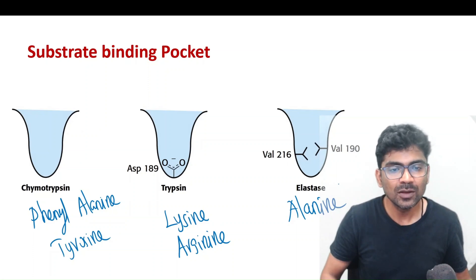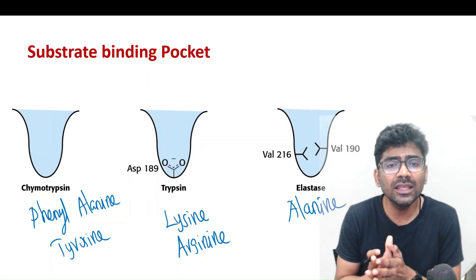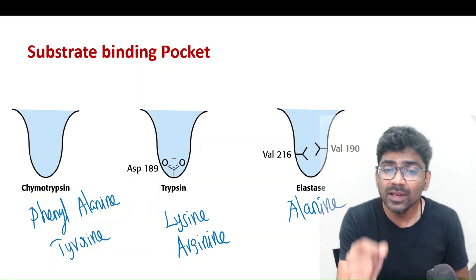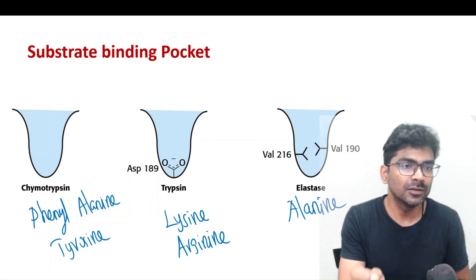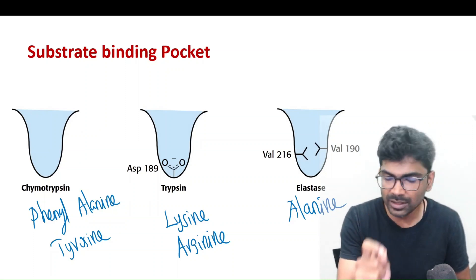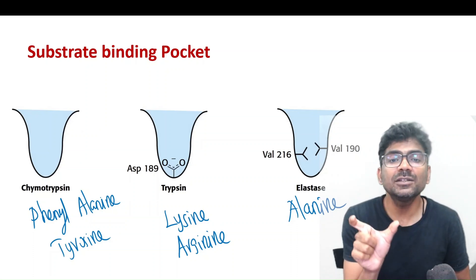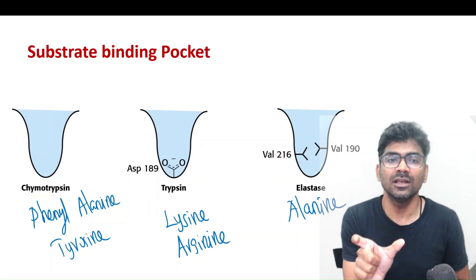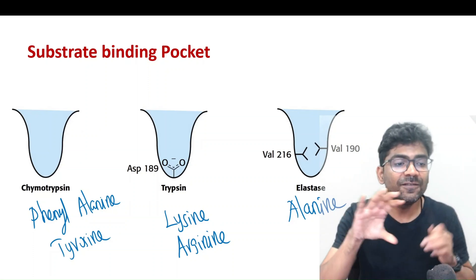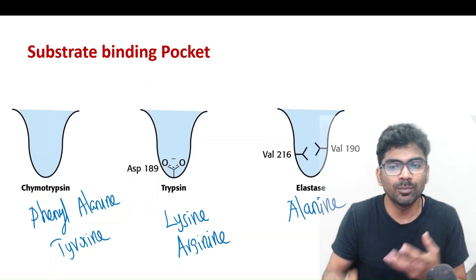So, chymotrypsin, because of the wide mouth of its substrate-binding pocket, cleaves after phenylalanine or tyrosine. Trypsin, because of the presence of aspartate, cleaves after lysine or arginine. Elastase, because of the shallow substrate-binding pocket, cleaves after alanine. Remember, all three enzymes have the same catalytic triad, so they are all proteases, but their substrate specificity is determined by the difference in the substrate-binding pocket.